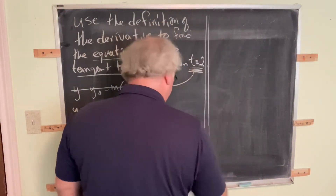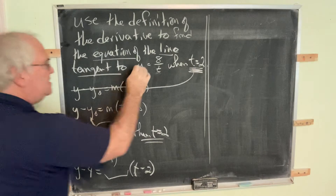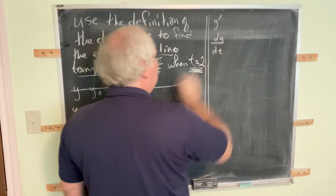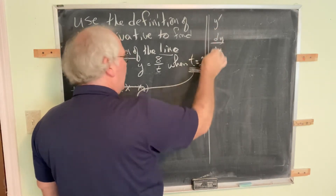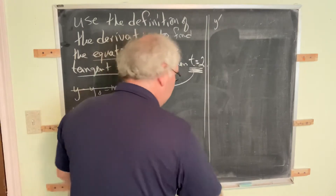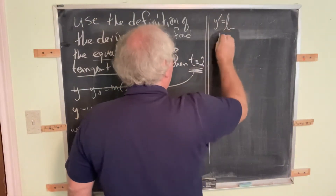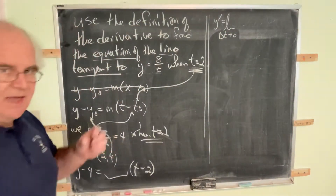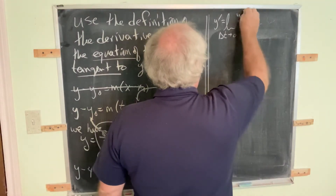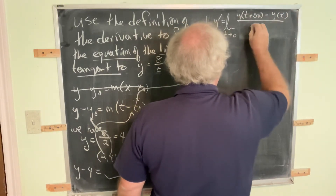We can write y prime, or equivalently dy/dt — whichever notation you prefer; you should get used to the various notations. Using y prime, this equals the limit as Δt goes to zero of [y(t + Δt) minus y(t)] over Δt. Since y of something equals 8 divided by that something, we get: the limit as Δt→0 of [8/(t + Δt) minus 8/t] all over Δt.